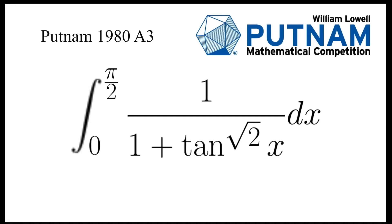In this video, we are going to evaluate the given integral: 1 over 1 plus tangent x to the power root 2 dx, integrating from x equal to 0 to x equals pi over 2. This is a problem from Putnam 1980.